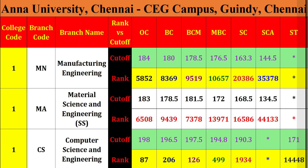Manufacturing Engineering. Manufacturing Engineering cut-off: OC 184, rank 5852. Other category cut-offs: 180, 178.5, 176.5. MBC SC 163, SC 144.5.